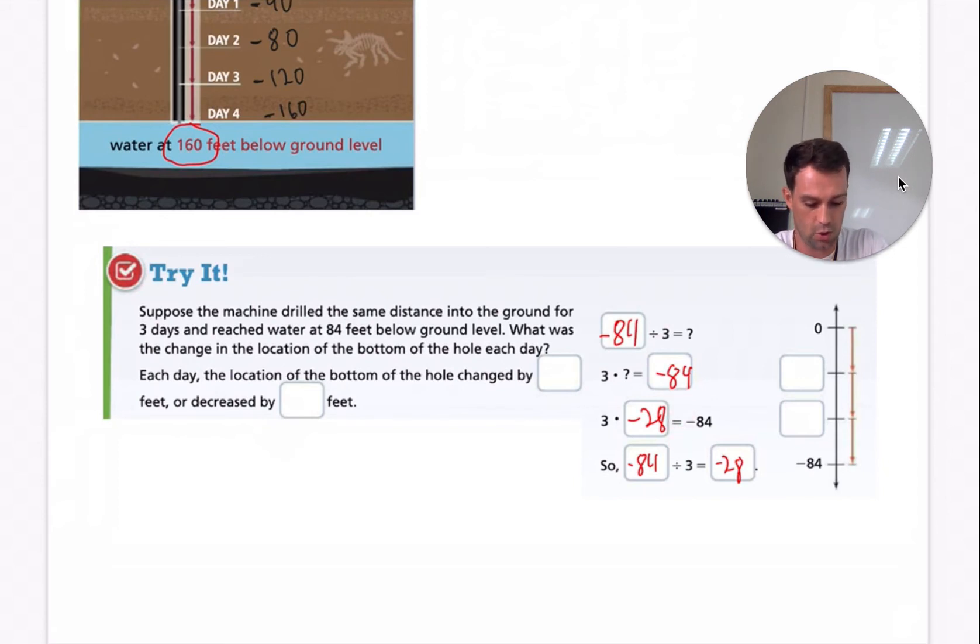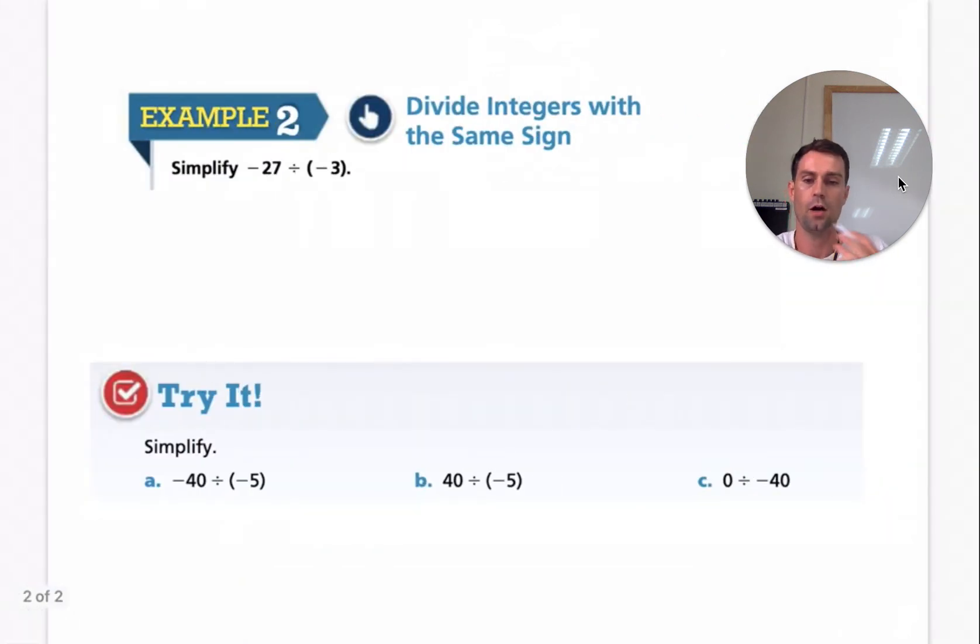So it is going down negative 28, negative 56. So it went down by negative 28. So it decreased by 28 feet.